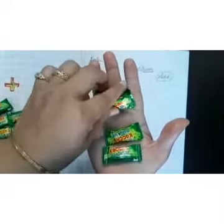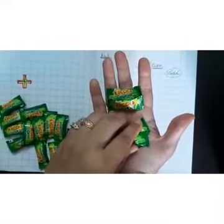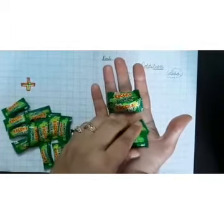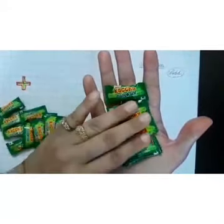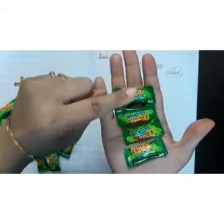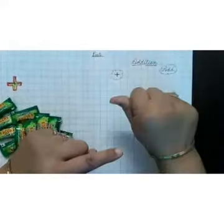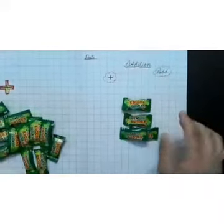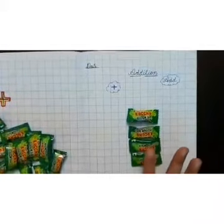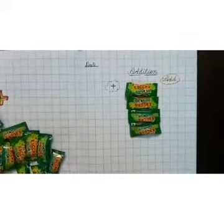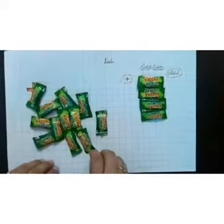Now how many toffees all together? What we will do? How many toffees you have now? So how will you find it? You just count it - one, two, three, and four. So after adding these toffees, after doing this addition, you are going to get four toffees.